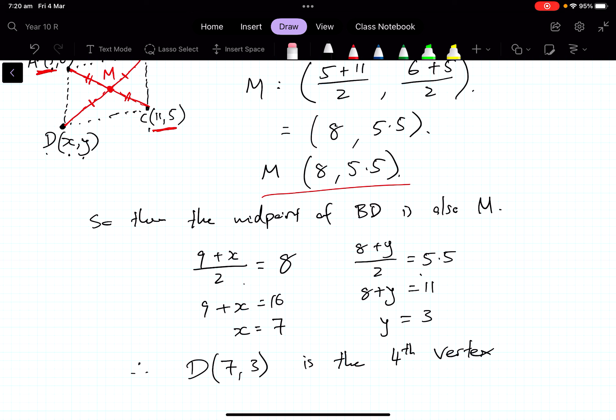I've used the fact that parallelograms have diagonals that bisect each other—have the same midpoint and pass through that—to then work out using the midpoint formula what D is. Work it through, think it through, ask questions if you need to. That's the end of the second example.